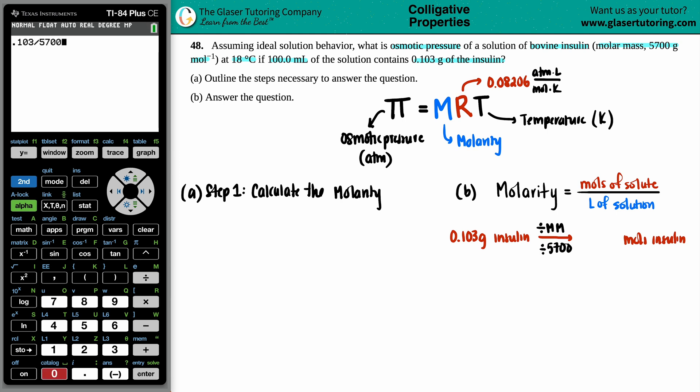So we're going to divide by 5,700. So we have 1.8070 times 10 to the negative 5th moles. So we have the mole value.